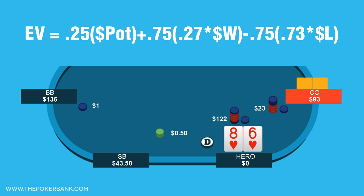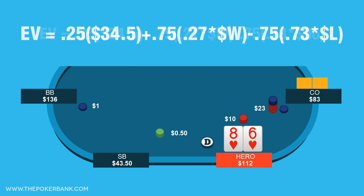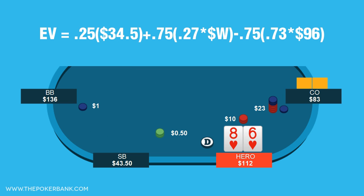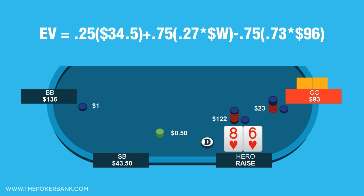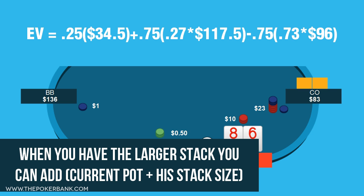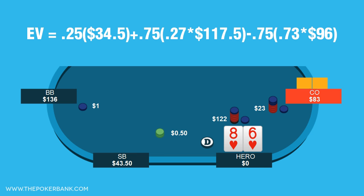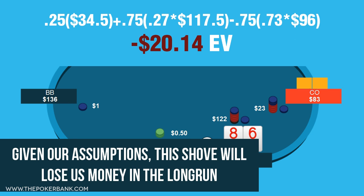Now for the dollar amounts and we can solve. The pot before we shove is $34.50. If we shove and villain wins, we lose $96. Because villain has the shortest stack, we can only lose $83 plus the $13 to match his 4-bet. Our $10 3-bet no longer belongs to us and thus we cannot lose it once we shove. If we shove and villain calls and we win, we win $117.50 — the shortcut is current pot plus villain stack size. We see that our shove has a negative $20.14 expected value, so given these parameters this is a bad shove and we should avoid making it.